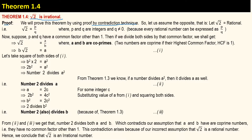So let's assume the opposite — the contrary to what the theorem says — and let's say the square root of 2 is a rational number. Note that we have to prove that the square root of 2 is irrational, but we are starting with the contradictory statement: let square root of 2 be a rational number.